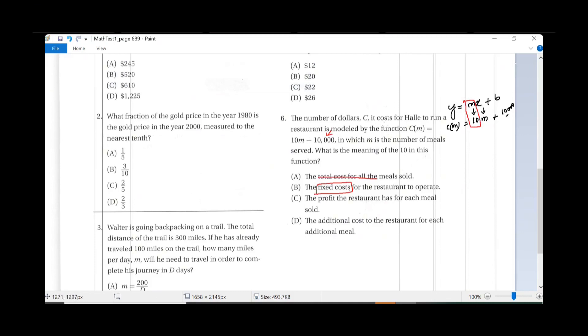What is it talking about? It's a cost, right? So it's a cost per meal, additional cost for each.